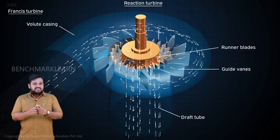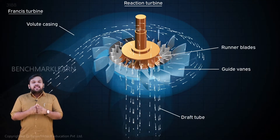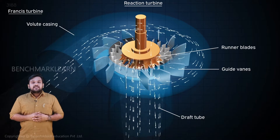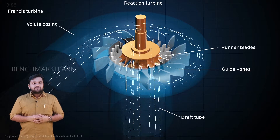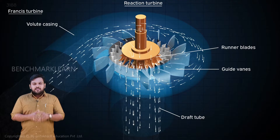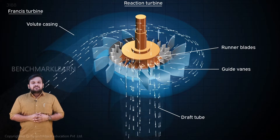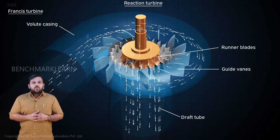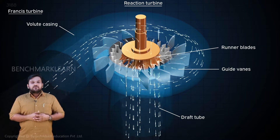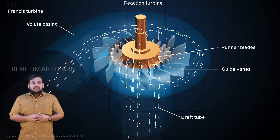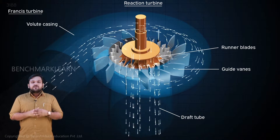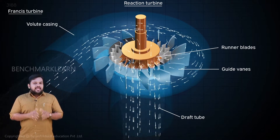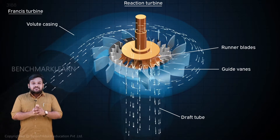It is the net pressure difference from the inlet to the outlet which determines the energy from the turbine. To achieve a maximum difference, the outlet pressure is kept very low, sometimes less than atmospheric. This will prevent the natural flow of water from the outlet. A draft tube corrects this.